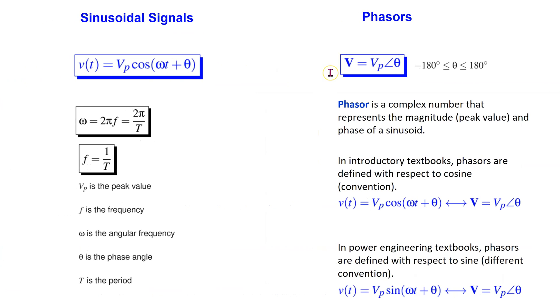Recall that in circuit analysis, a phasor is a complex number that represents the magnitude and phase of a sinusoid. In introductory circuit analysis textbooks, phasors are typically defined with respect to the sinusoid written as a cosine. In power engineering textbooks, phasors are defined with respect to the sinusoid written as a sine. Whichever convention is used, we need to be consistent with it. In PySpice, for convenience, we will define the phasor with respect to sine.